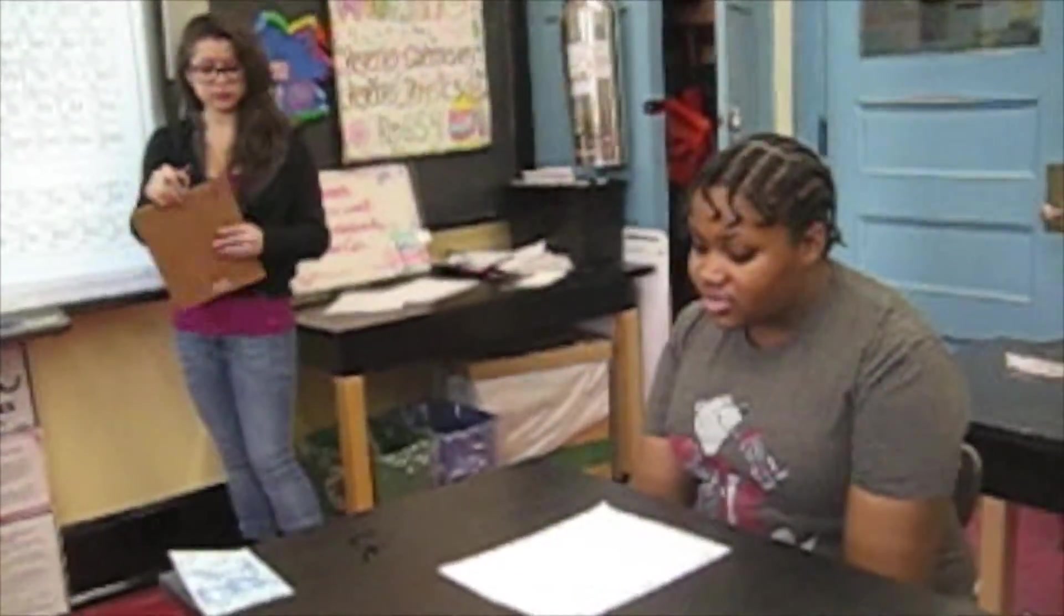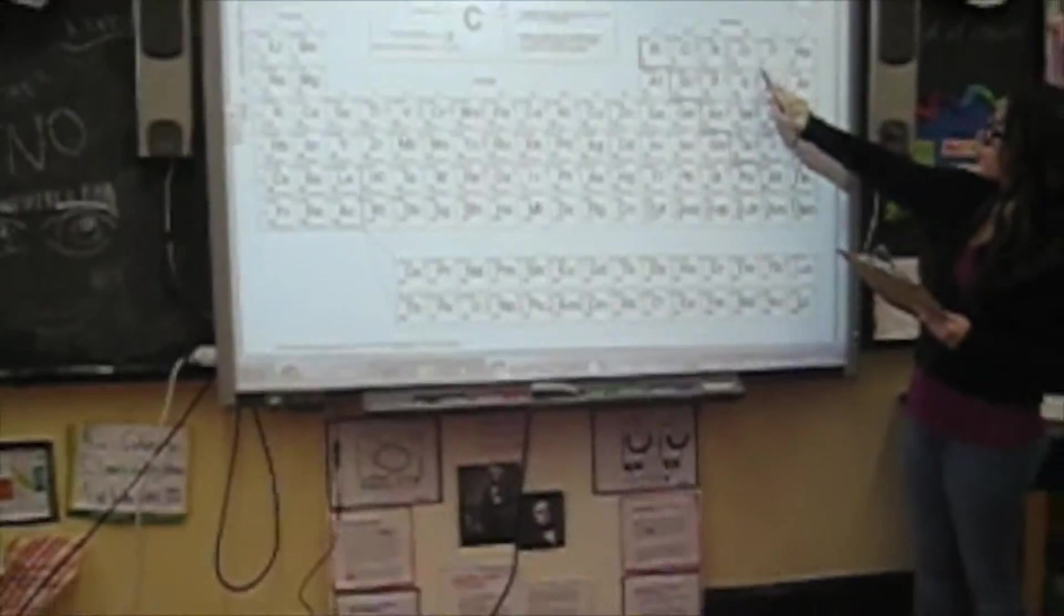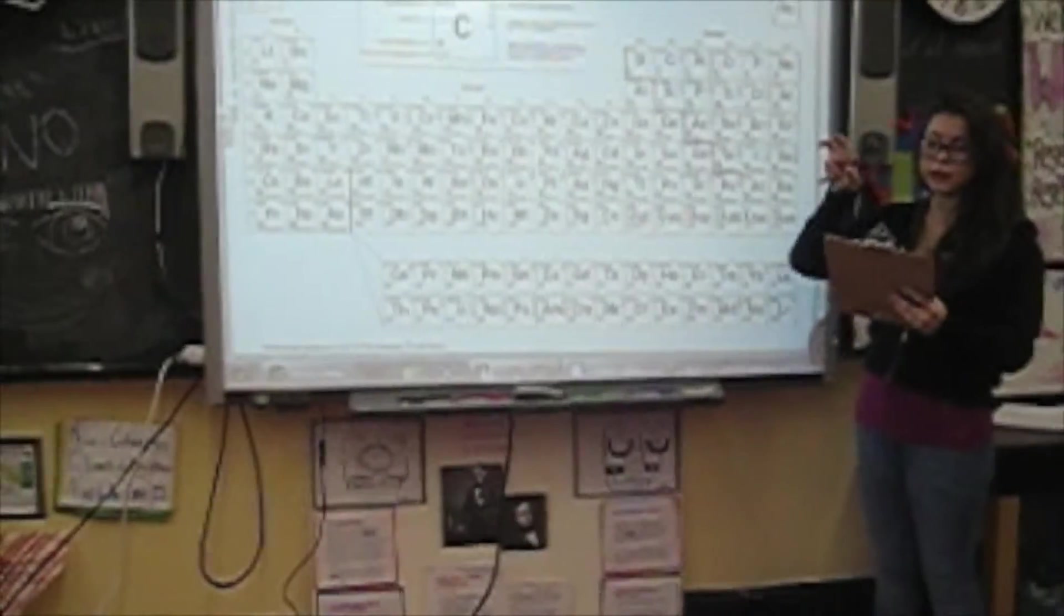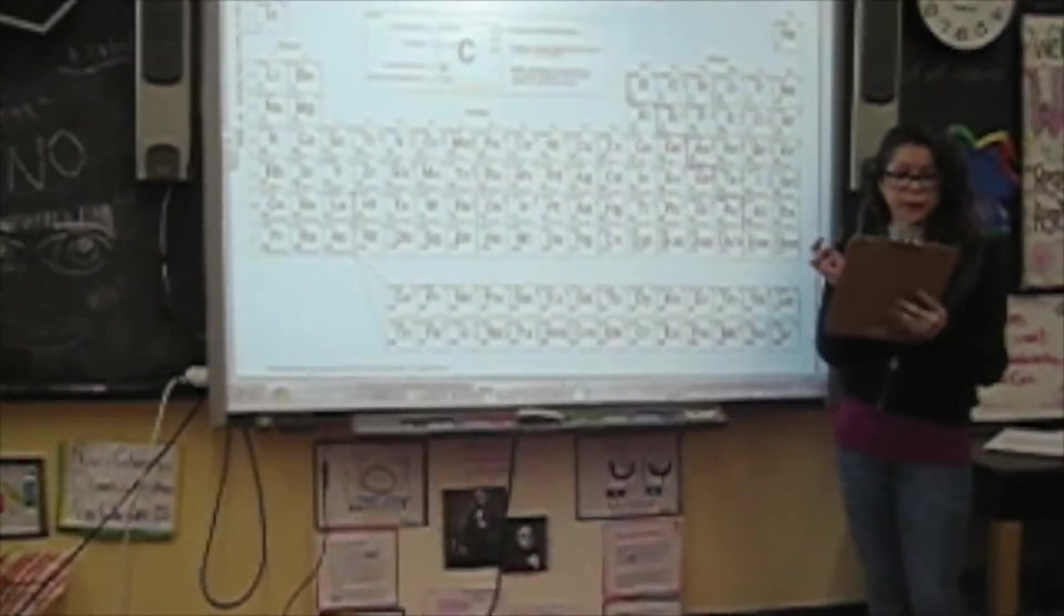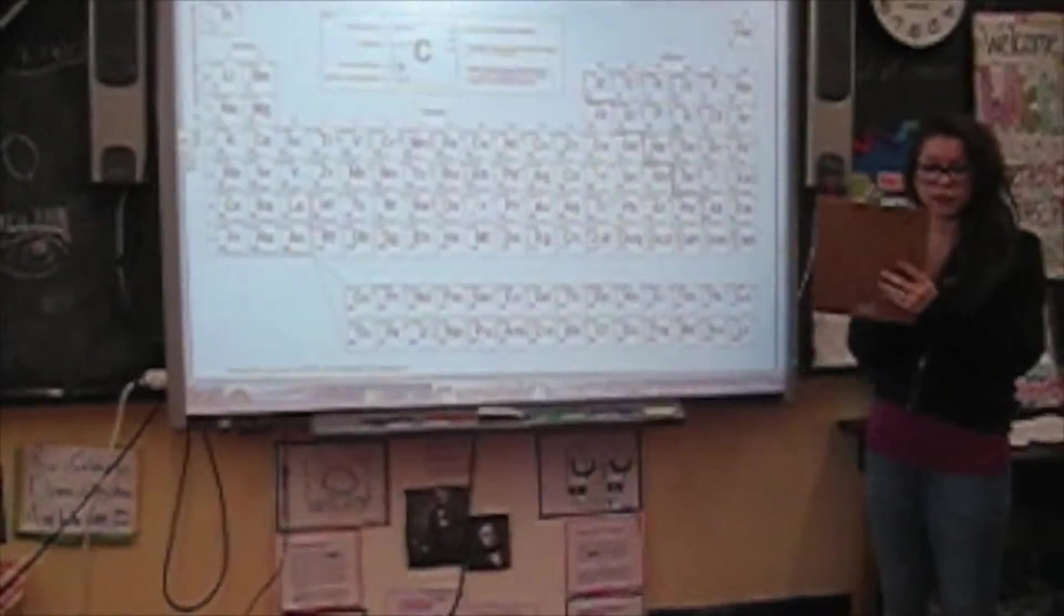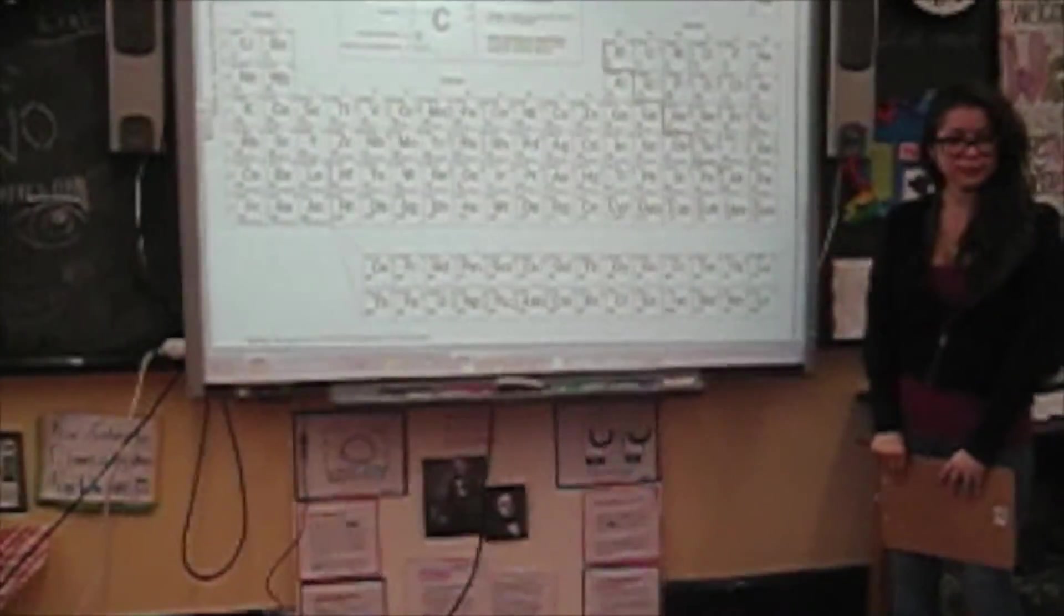But how come it requires more energy to remove an electron if their radius is smaller? Because, since you see here it's two seven, they want to keep their electrons. Their electrons tend to be attracted more closely so they can keep their electrons. Okay, thank you. You're welcome.